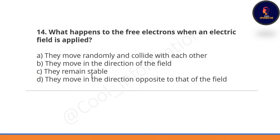What happens to free electrons when an electric field is applied? Option A: they move randomly and collide with each other. Option B: they move in the direction of the field. Option C: they remain stable. Option D: they move in the direction opposite to that of the field. Correct option is D.